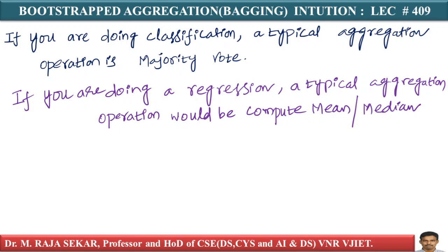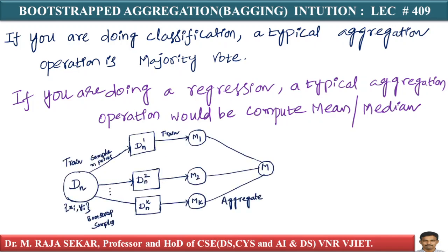What is literally happening here is: on each sample of data, I am training a model. After you train all these models, you have M1, M2, and so on, Mk — and you apply majority vote. My final aggregation step is majority vote.